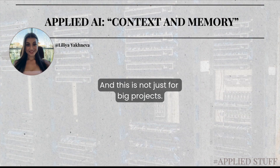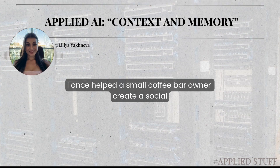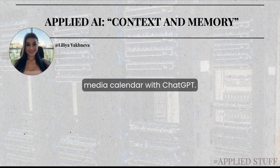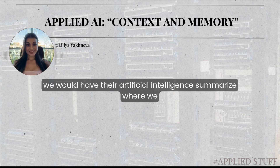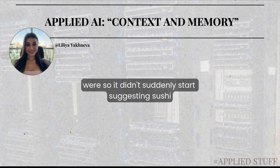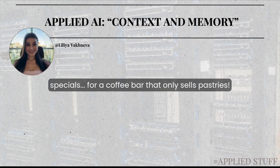And this is not just for big projects. I once helped a small coffee bar owner create a social media calendar with ChatGPT. We started with their brand voice, their top-selling items, and their promotions. Every few steps, we would have the artificial intelligence summarize where we were, so it didn't suddenly start suggesting sushi specials for a coffee bar that only sells pastries.